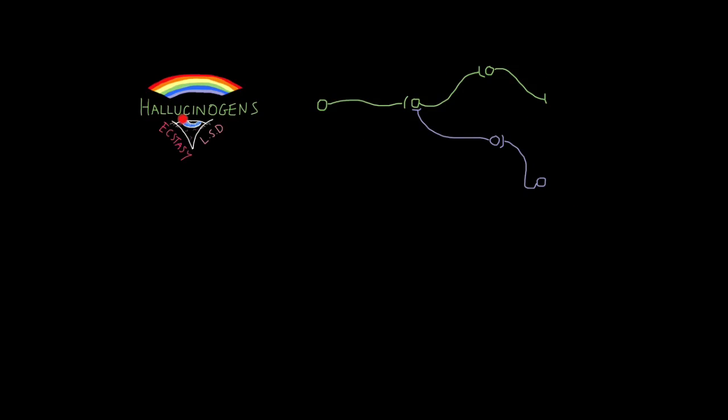Next up are the hallucinogens. This is the final group. Common hallucinogens include ecstasy and LSD. Hallucinogens work by changing or altering the perception of the world around you. Quite commonly, some hallucinogens affect your ability to perceive colour. So what would normally appear one colour looks different.